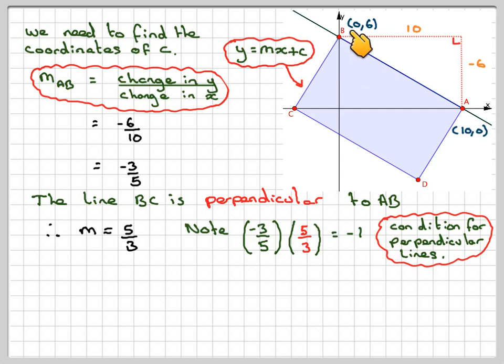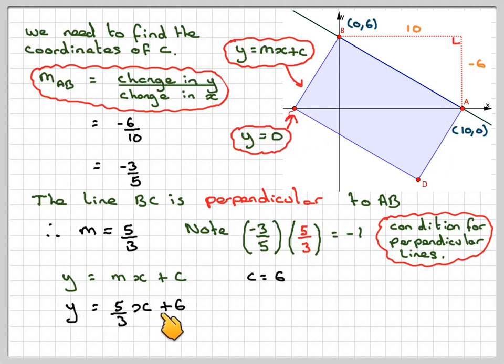Therefore, the equation of this line is going to be Y = MX + C, so Y = -5/3X + 6. Now I wasn't asked to find the equation of this line. I want to find the coordinates of this point here. Now at this particular point here, the Y coordinate is equal to 0 at this particular point. So if I put Y = 0 and then solve that equation.